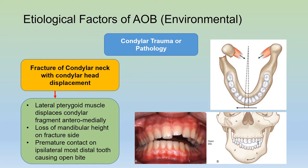Other etiological factors that can cause open bite malocclusion include condylar trauma or pathology. A fracture of the condylar neck due to trauma will cause displacement of the condylar head. This displacement is caused by the action of the lateral pterygoid muscle, and the fractured condylar fragment is displaced anteromedially. This leads to a loss of mandibular height on the fracture side, and what results is premature contact on the ipsilateral most distal tooth, causing an anterior open bite condition.